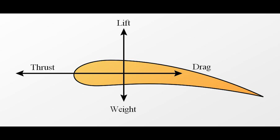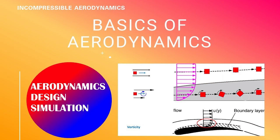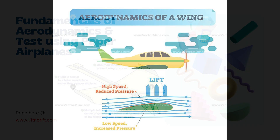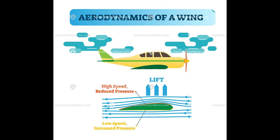Lift is the force that enables an object to rise or stay aloft. It is generated primarily by the wings of an aircraft or the shape of an object moving through the air. Lift is created due to the pressure difference between the upper and lower surfaces of the wing. According to Bernoulli's principle, faster airflow over the curved top surface of the wing results in lower pressure compared to the slower airflow below, creating an upward force. Additionally, Newton's third law of motion states that the downward deflection of air by the wing results in an equal and opposite upward force, further contributing to lift.